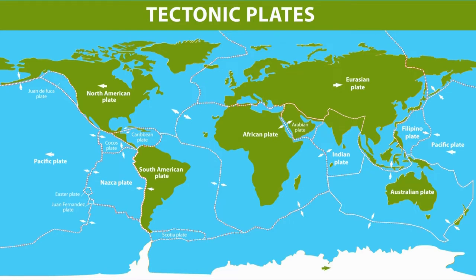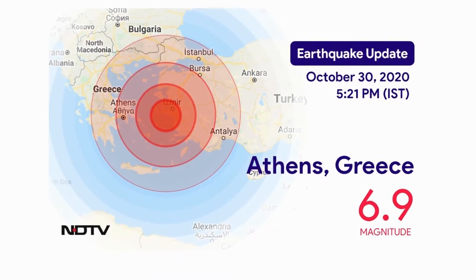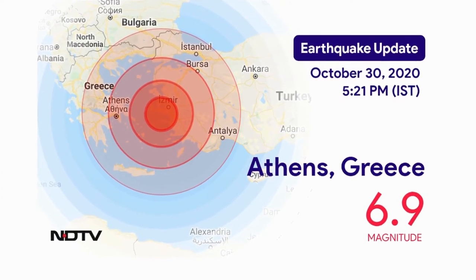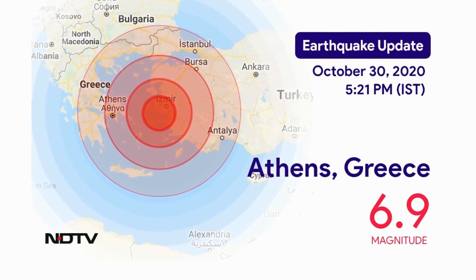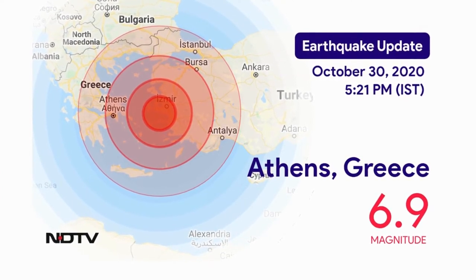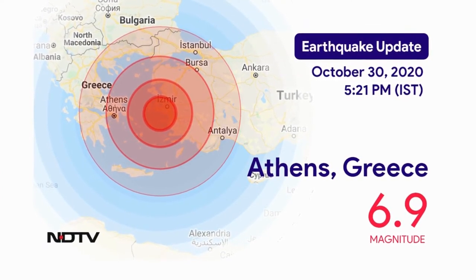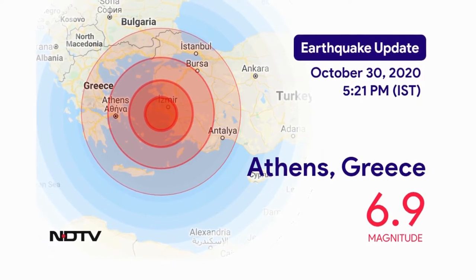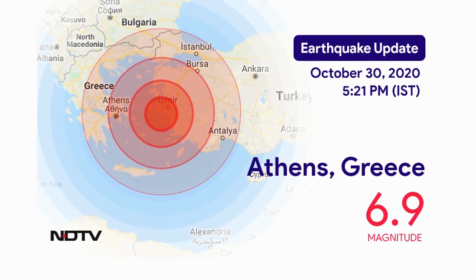However, today we will mainly focus on two famous countries: Greece and Turkey. Why do we need to specialize in these two countries? The main reason is that a significant earthquake occurred between these two countries, which is the Aegean Earthquake.